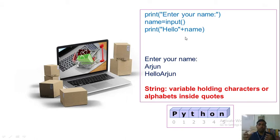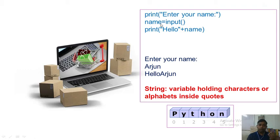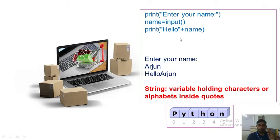The input function takes everything as a string by default. If you want to work with an integer value, you have to convert it using int(). Here, whatever we input — 'Arjun' — gets assigned to name. Then print('hello' + name) uses concatenation, which means joining two strings, so the result is 'hello Arjun'.